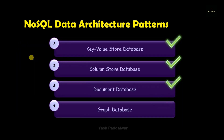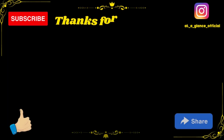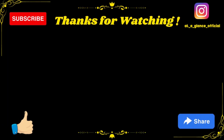To summarize, we have seen all four types of data architecture patterns of NoSQL: starting from key-value store database, then column store database, next document database, and lastly graph database. We also have seen different examples of each. I hope all these data architecture patterns of NoSQL are clear to you all. If you have any doubt, put it in the comment section.